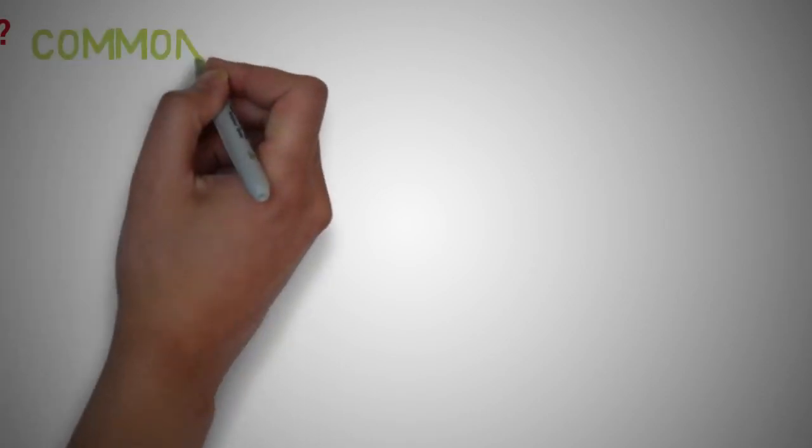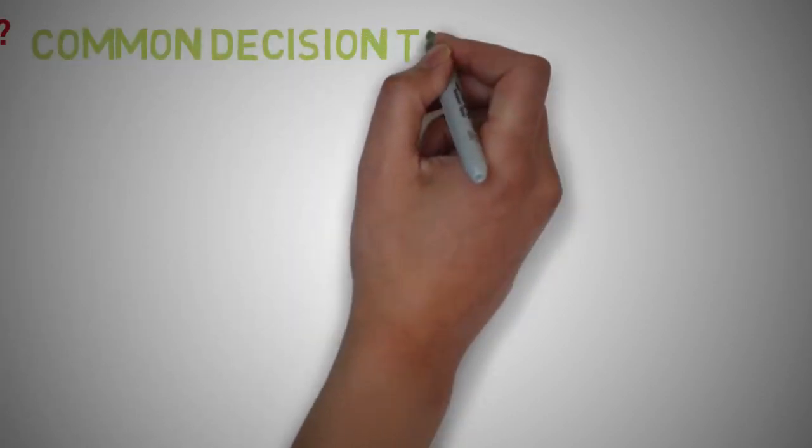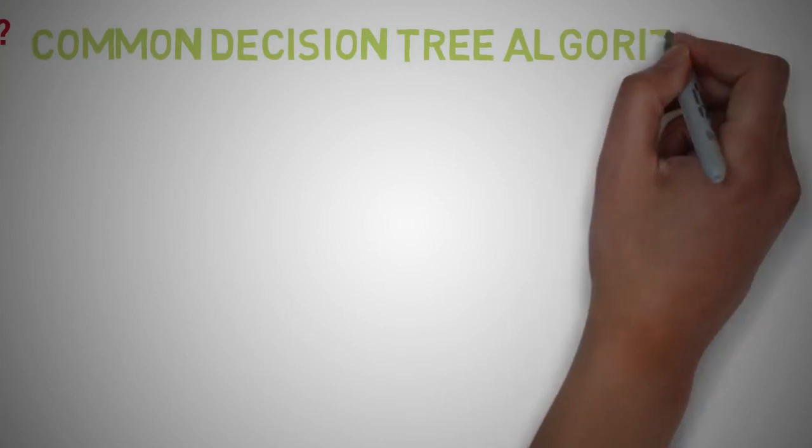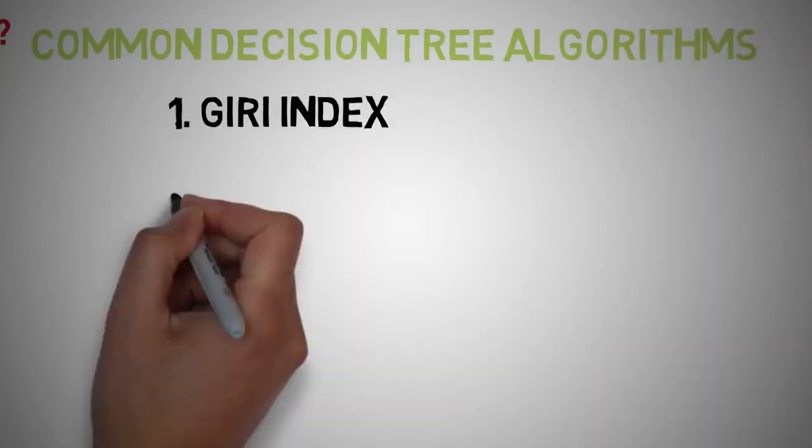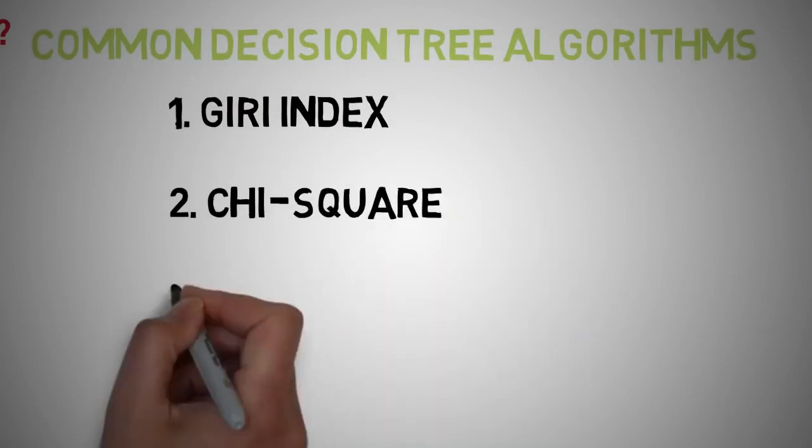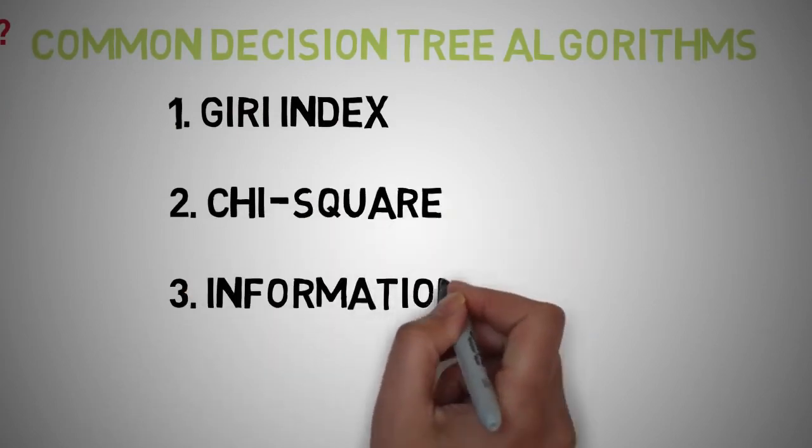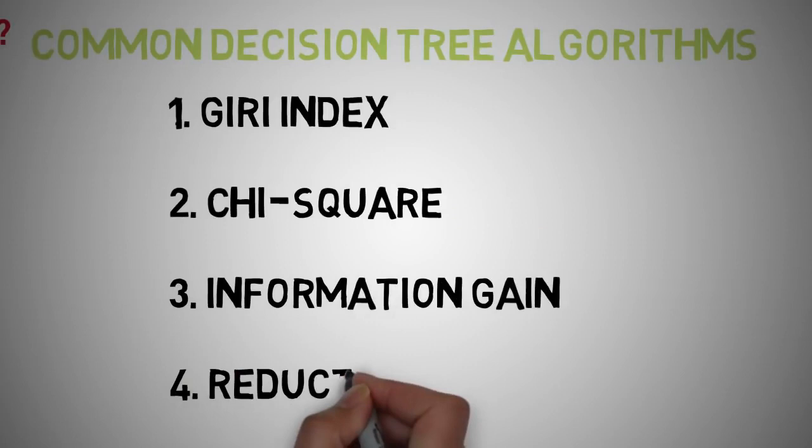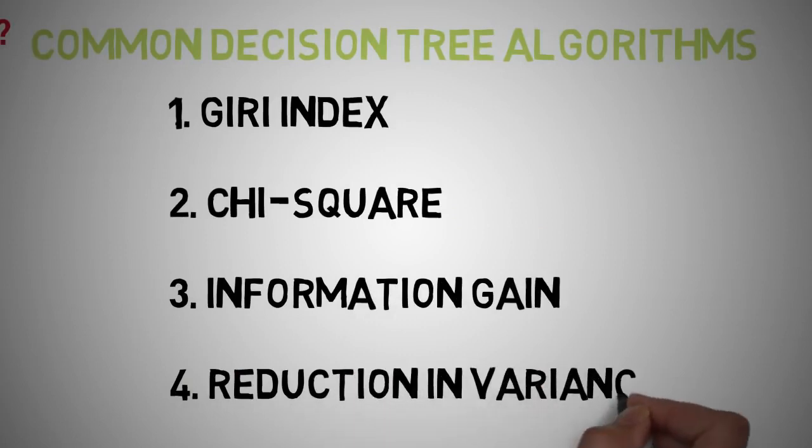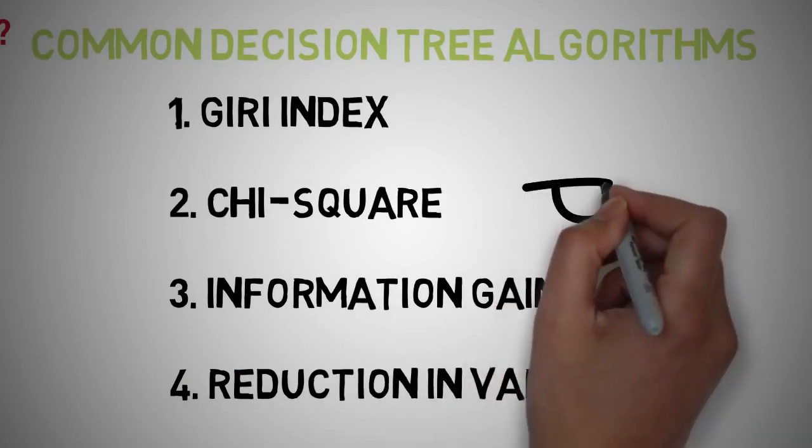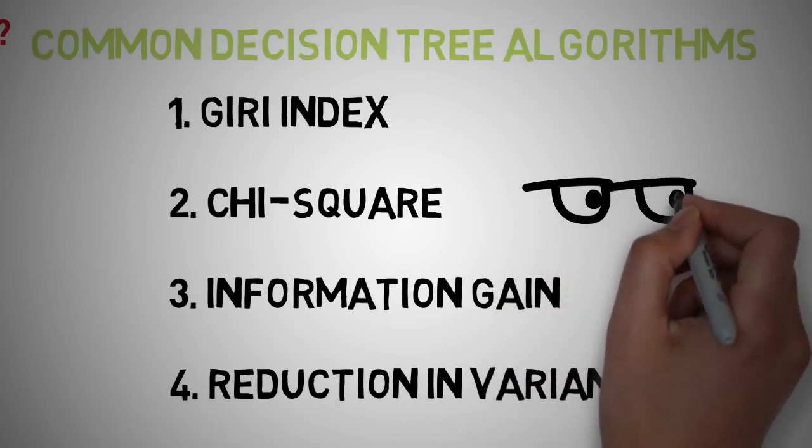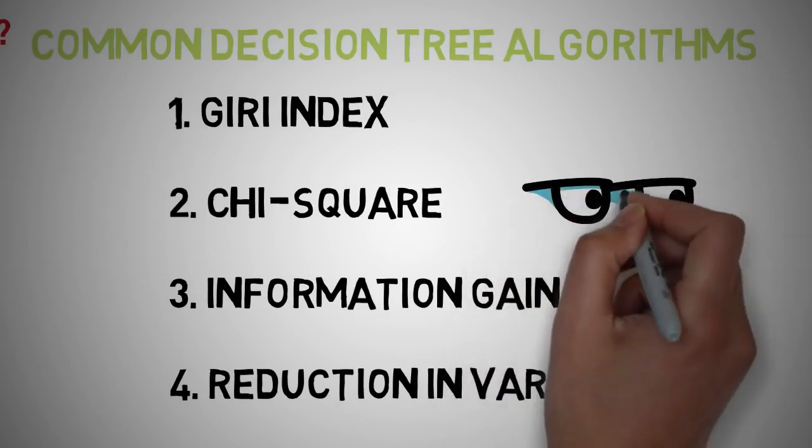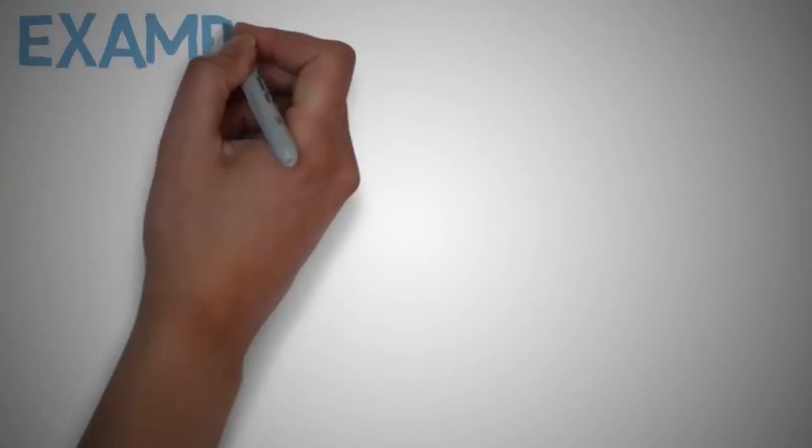The algorithm selection is also based on type of target variables. The four most commonly used algorithms in decision tree are: Gini index, chi-squared, information gain, and reduction in variance. We'll not go into detail on these algorithms as some involve quite a lot of math, and most of the hard work is done within scikit-learn's libraries.